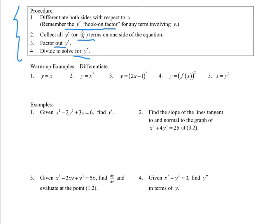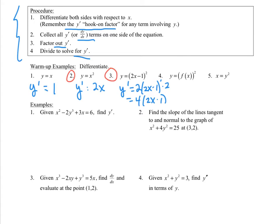Here's a little warm-up, problems 1 through 5. Try 1 through 4 and pause, then come back for the answers — we'll do number 5 together. For number 1, y prime equals 1. Number 2, y prime equals 2x — just the power rule. Number 3 uses the power rule with the chain rule: bring the 2 out front, raise to one less power, then chain. For number 4, y prime equals 2·f(x)·f'(x) using the chain rule.